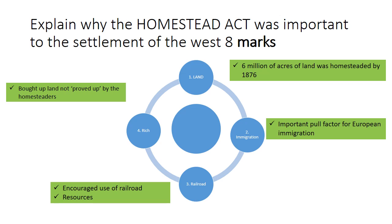Thirdly, the Homestead Act led to greater demand from homesteaders for resources, particularly timber, which encouraged the clamour for the building of the railroad. In the medium to long term, after five years if homesteaders did not prove up their land by paying ten dollars — because the land was too poor or wasn't a success — the land was often snapped up by rich landowners, increasing the social divide.